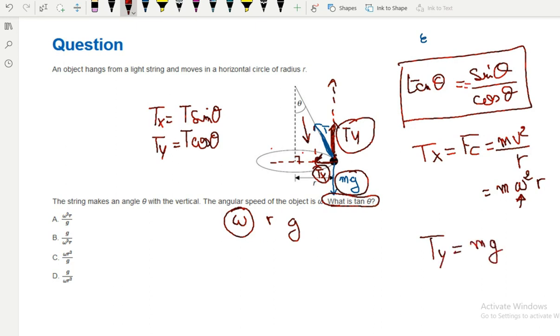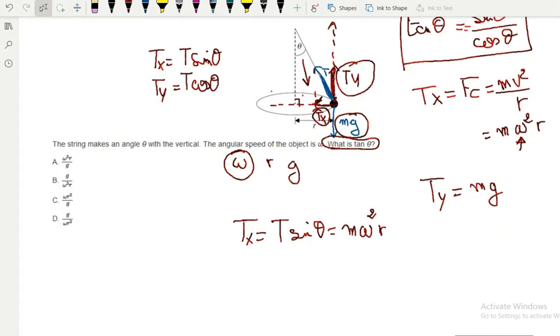I have everything I need. Tx, which is T sine theta, equals M omega squared times R. And Ty, which is T cosine theta, equals M times G. Now I'm going to divide formula 1 by 2.